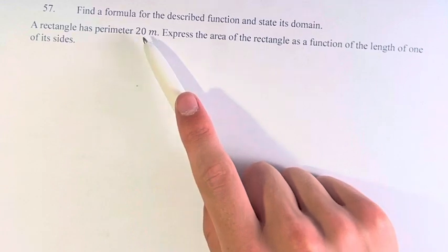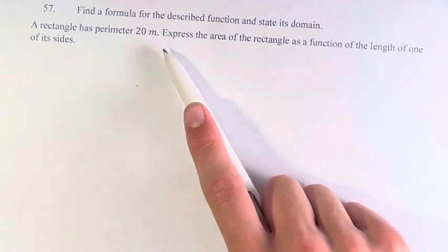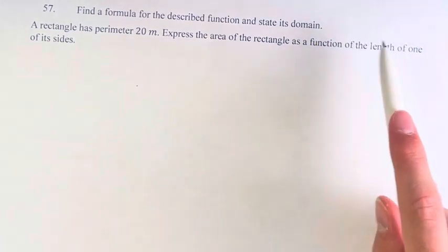In this problem, we have a rectangle with a perimeter of 20 meters, and we want to express the area of the rectangle as a function of the length of one of its sides.